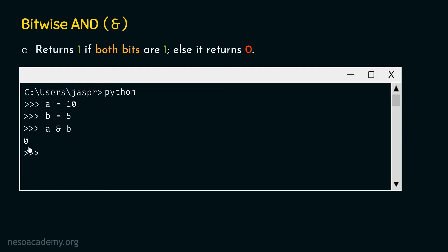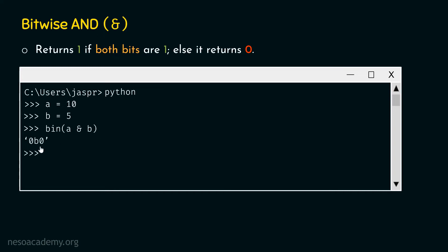To see the binary value, we need to provide A & B as an argument to the bin() function. We type bin(A & B). This bin() function converts the decimal result of A & B to its binary equivalent. If we hit enter, we get 0b0 as the result. The prefix 0b denotes that this is a binary number. There is no need to write all 4 bits as 0000, since a single 0 is enough to represent binary 0. This is how the bitwise AND operator works.